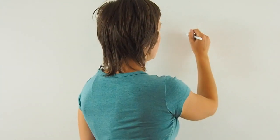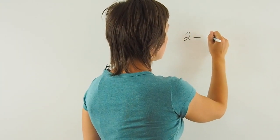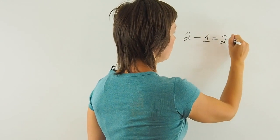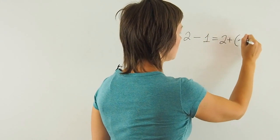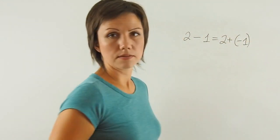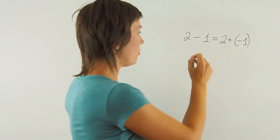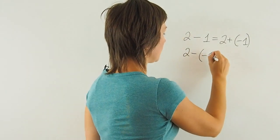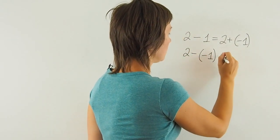When subtracting two numbers, add a number with an opposite sign, like this. 2 minus 1 is the same as 2 plus negative 1. Or 2 minus negative 1 is the same as 2 plus positive 1.